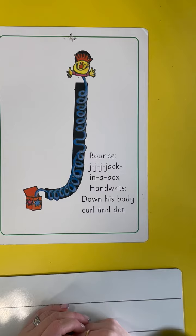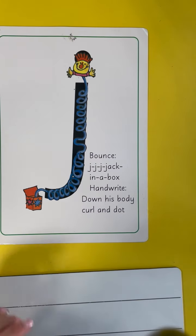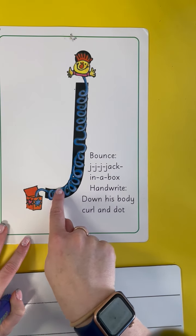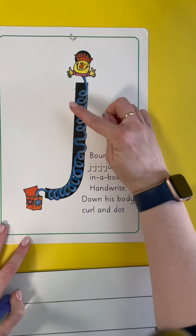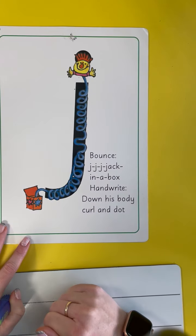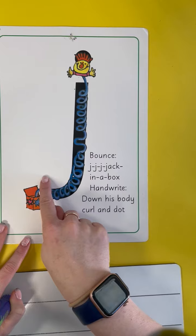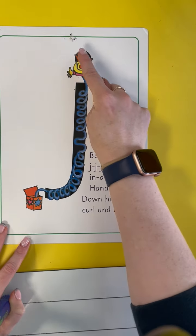J. We start by going down his body, curl, and a dot for his head. Down his body, curl, and a dot for his head.